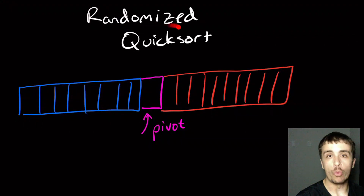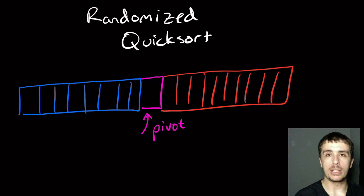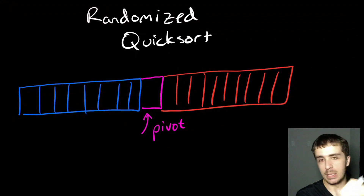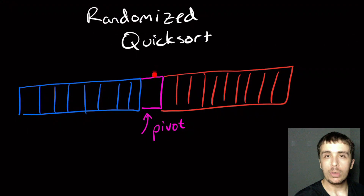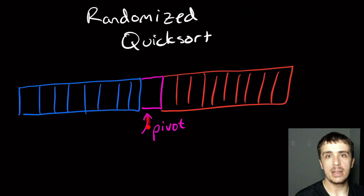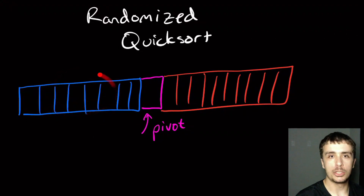I want to talk about the randomized quicksort algorithm. You should know what quicksort is — it's a method to sort an array of elements. What you usually do is look at the list, pick one element called the pivot, and partition the array so that elements on the left are less than the pivot and elements on the right are bigger. Then we recursively call quicksort on the left part and then on the right part.